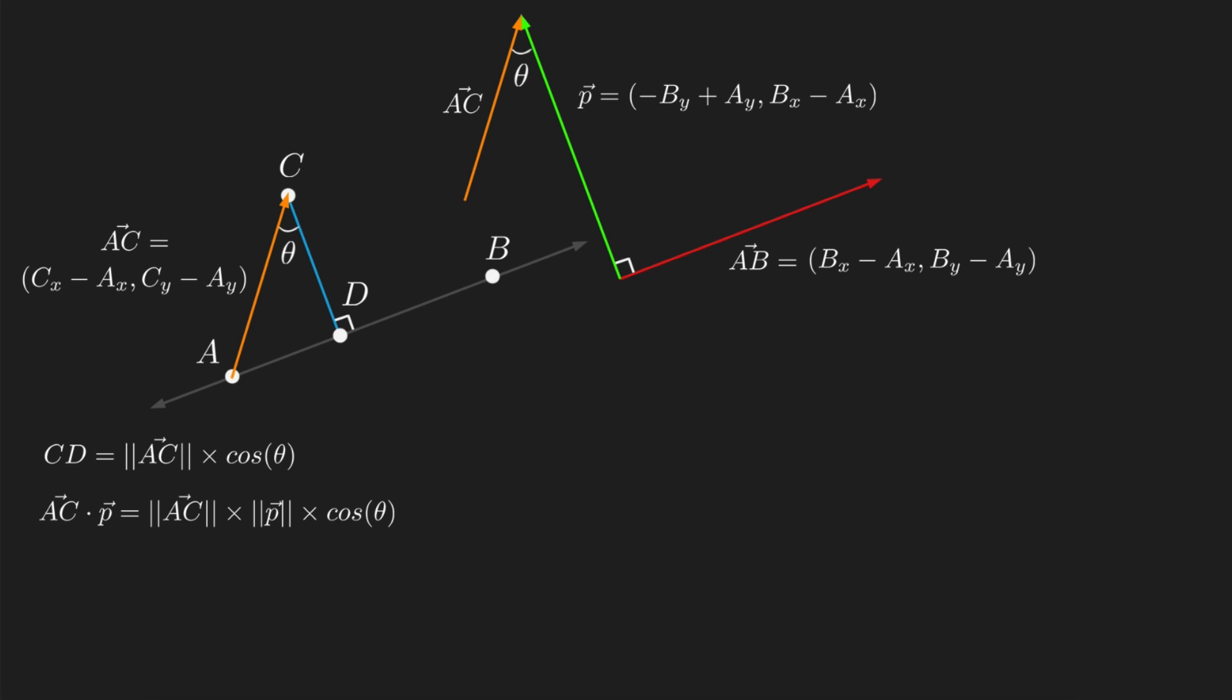The first formula tells us that AC dot p is equal to the length of AC multiplied by the length of p multiplied by the cosine of the angle between them. The second form tells us that AC dot p is also equal to the x component of AC multiplied by the x component of p plus the y component of AC multiplied by the y component of p.